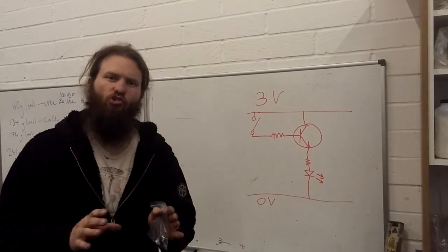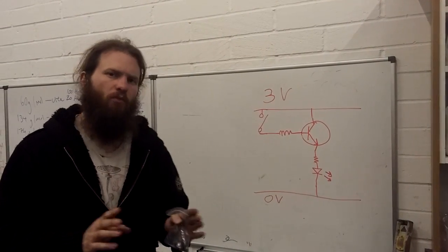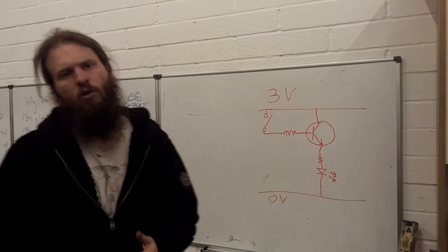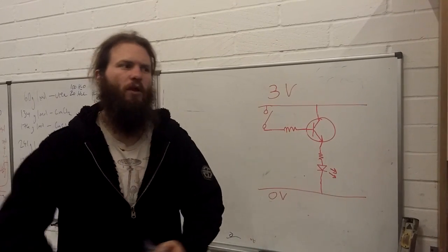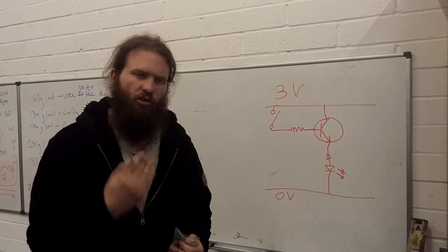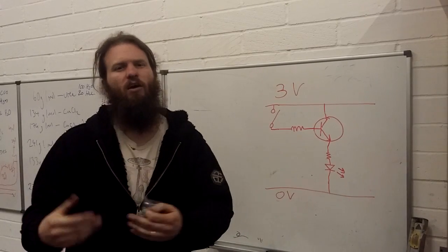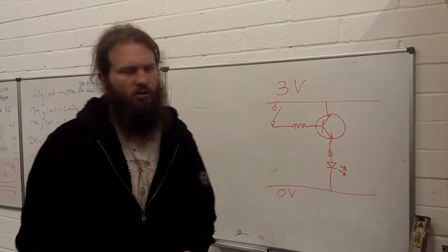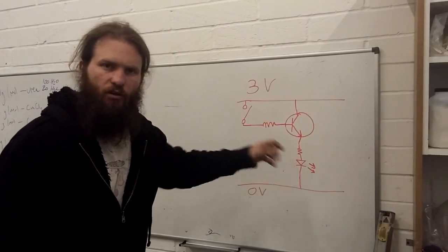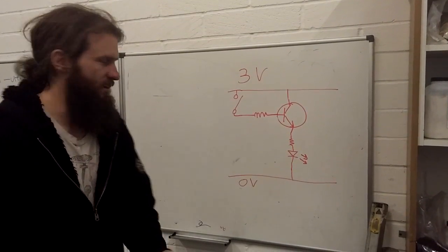Before I go on and explain the joule thief circuit, I need to explain one more thing, which is an electrical component called a transistor. As you saw in the sections before, we need a switch in order to switch on and off very quickly in order to make our LED light. A transistor is just an electrical switch. And on the setup on the board here, I'll show how a transistor is used to drive an LED.